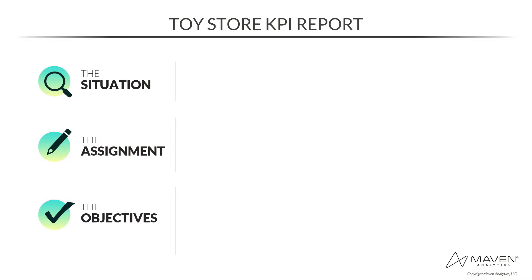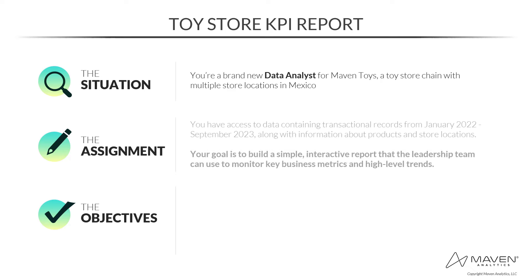Now let's dive into the assignment details for this beginner Power BI project. You've just been hired as a brand new data analyst for Maven Toys, a toy store chain with multiple store locations in Mexico. To better understand business performance, you've been handed data containing transactional sales records from January 2022 through September 2023, as well as information about products and store locations. Your goal is to build a simple interactive report that the leadership team can use to monitor key business metrics and high-level trends.